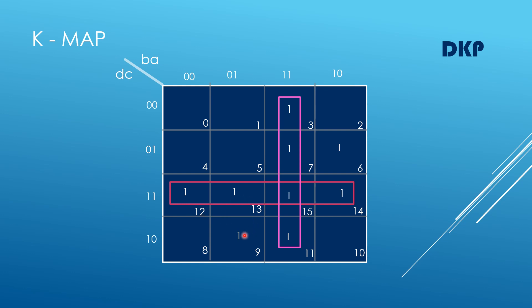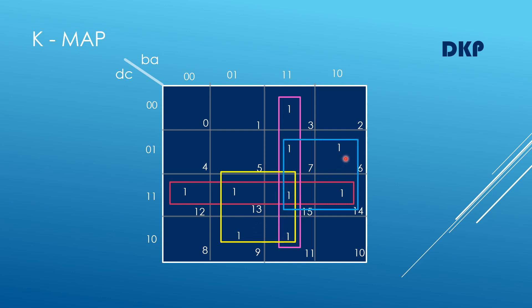A 1 is left out in cell 9 and in cell number 6. We can combine that left-out 1 with adjacent cells 13, 15, which also contain 1, to form a group of four ones — another quad. Similarly with the remaining 1 we can form another quad.